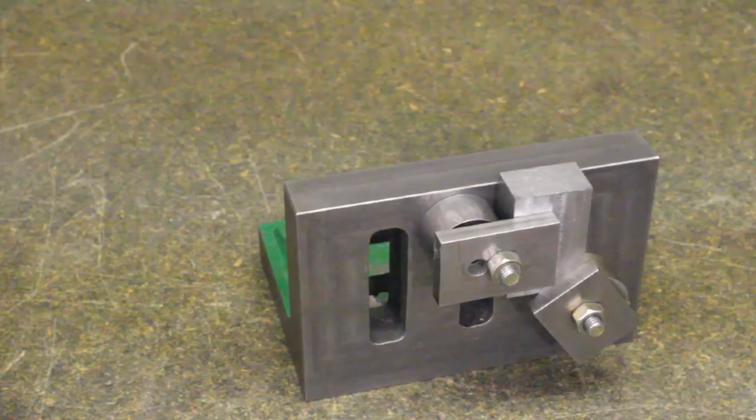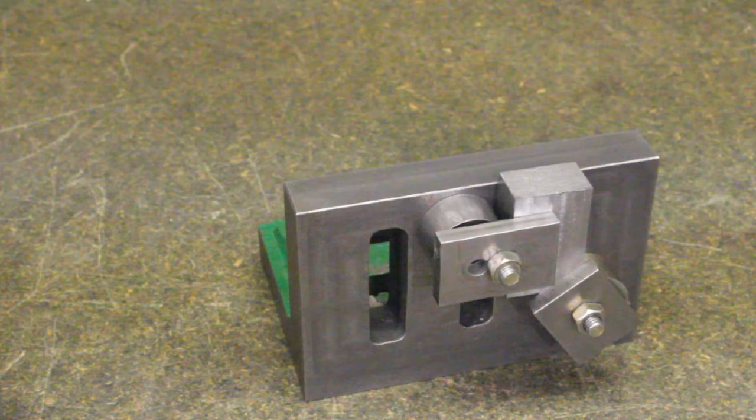There is though another advantage when used on the faceplate. That is, if a clamp were to come loose, the packing could not be thrown.